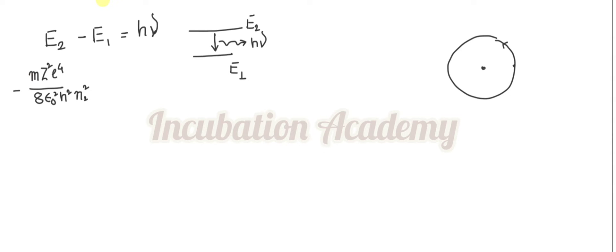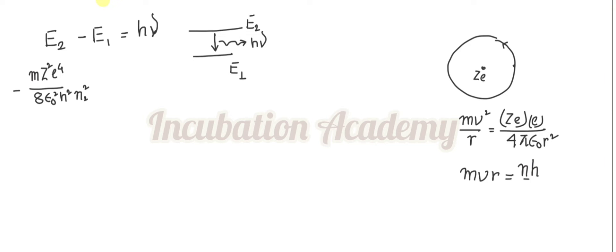Let me draw this: here is the orbit, this is the nucleus, and the electron is orbiting in that orbit. In this case, we equate mv squared over r with Coulomb's law: z·e·e divided by 4 pi epsilon-naught r squared. Using the quantization condition that angular momentum is an integral multiple of h over 2 pi, we get the energy equation after calculating velocity and electrostatic potential energy.